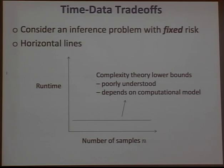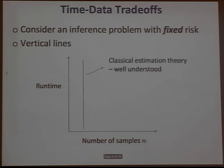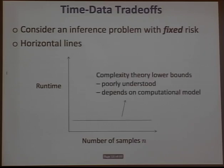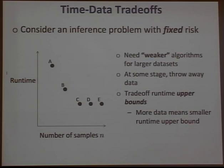The computational model matters — the Turing model may not be the most appropriate if you're thinking about numerical computation or solving sequences of linear systems. You might want different atomic units of computation for lower bounds. On the whole, horizontal lines are much less well understood than vertical lines, but our hope is to understand trade-offs given the state of the art in each field.